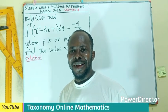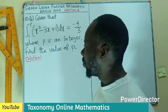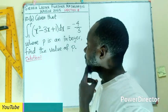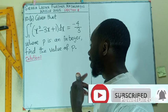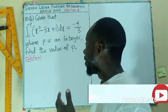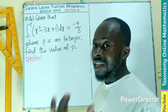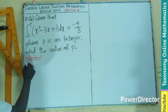Hello, welcome to question 10b. Given that the integral from 1 to p of (x squared minus 3x plus 1)dx gives us a value of minus 4 on 3, we have to find the value of p, where p is an integer.